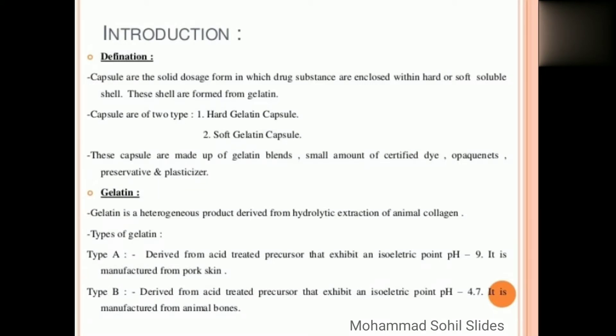This shell is formed from gelatin. Capsules are of two types: first hard gelatin capsule and second soft gelatin capsule. These capsules are made up of gelatin blends, a small amount of certified dyes, opacants, preservatives, and plasticizers.